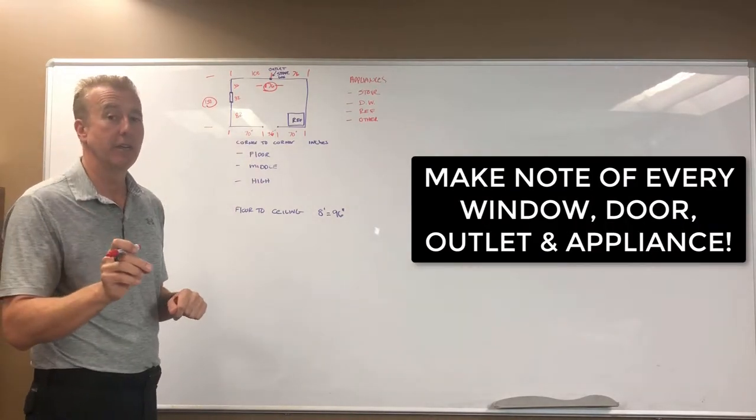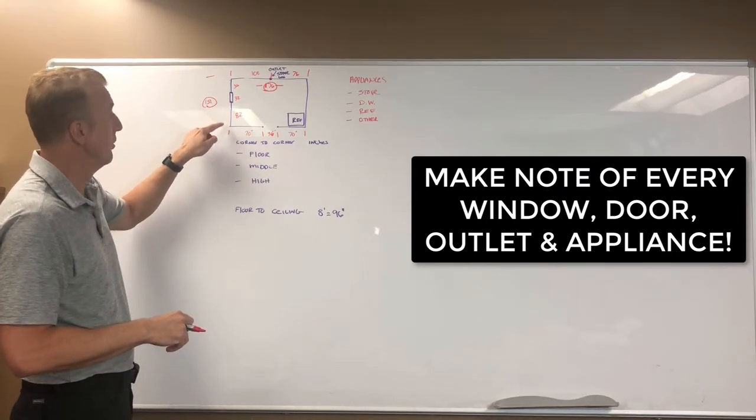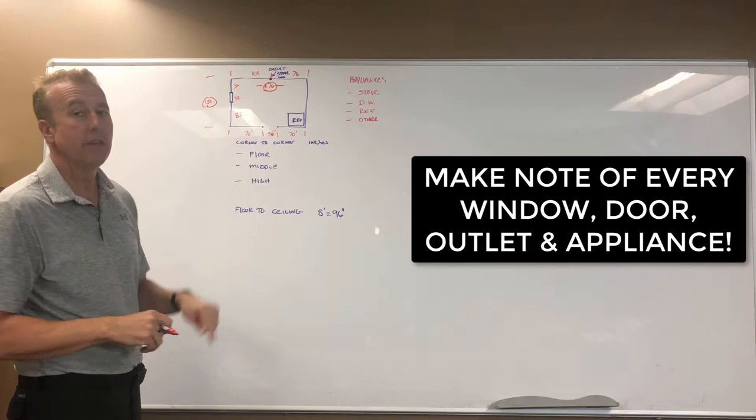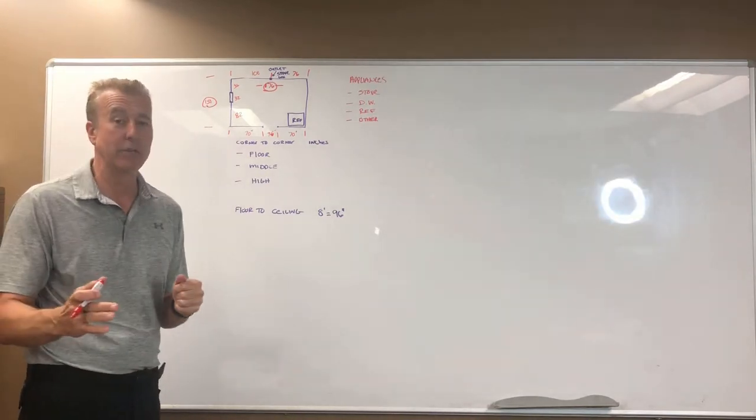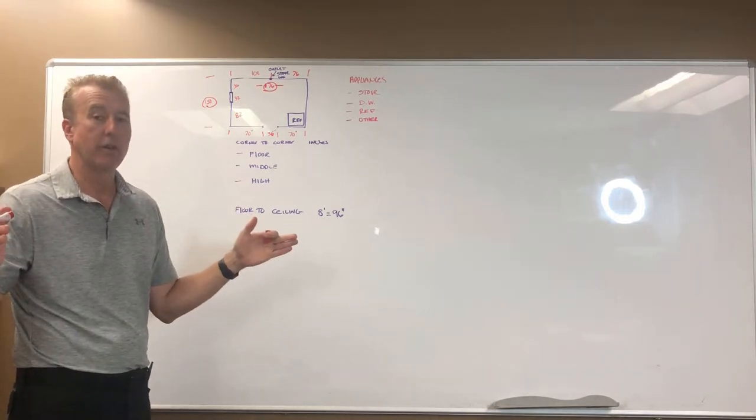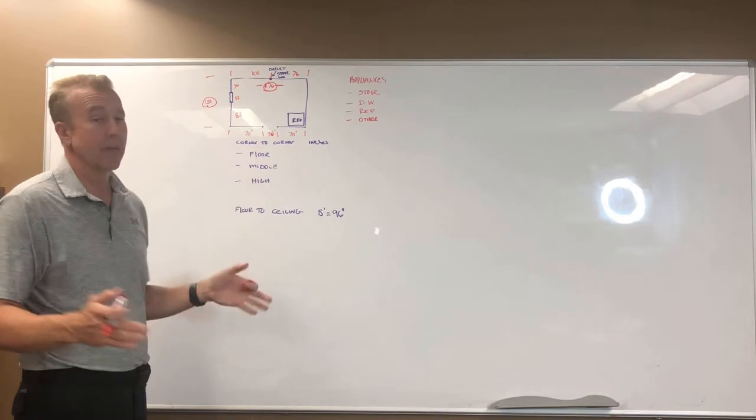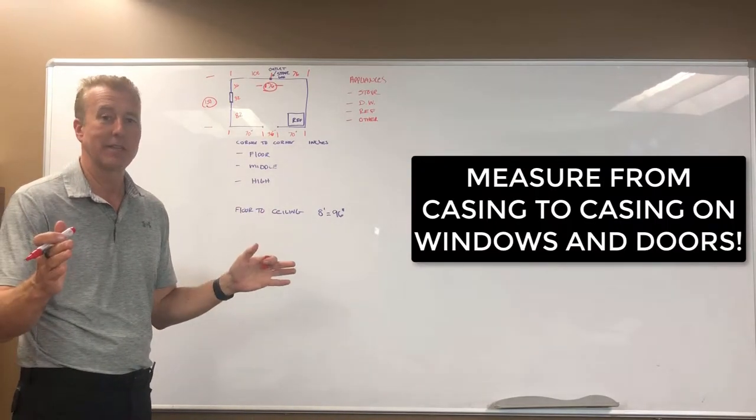Let me talk about the measurements that you're going to need then. Starting again from the corner, I'd like you to go from the corner to the edge of the window casing, and in my example that's 82 inches. Then I'd like you to measure the outside dimension of your window, which in this particular example is 32 inches, and that would be actually outside of the casing to the outside of the casing.